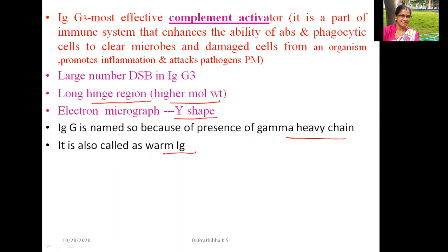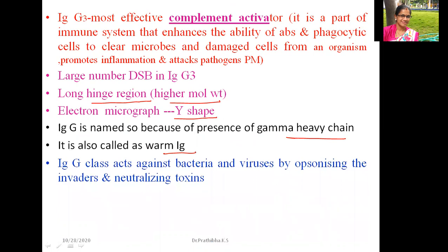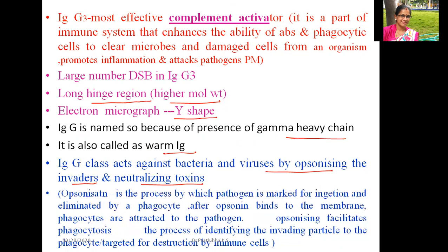IgG is also called a warm immunoglobulin. The IgG class acts against bacteria and viruses by opsonizing the invaders and neutralizing toxins. Opsonization is the process by which a pathogen is marked for ingestion and eliminated by a phagocyte.